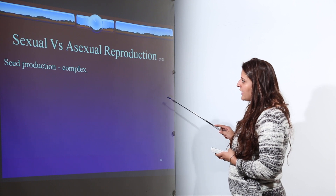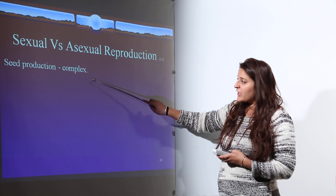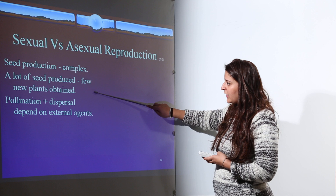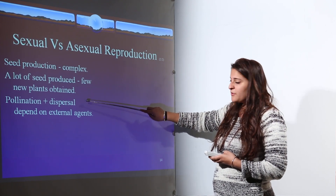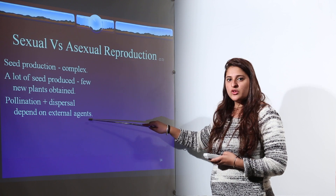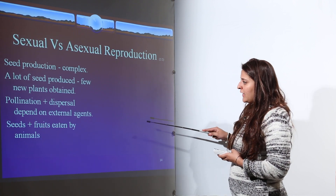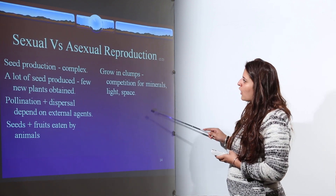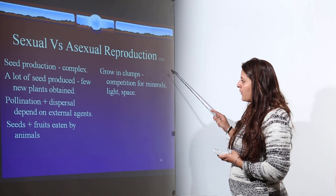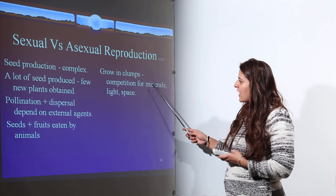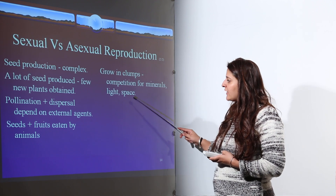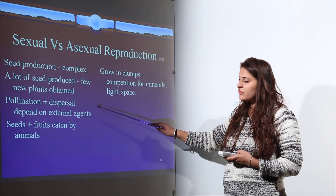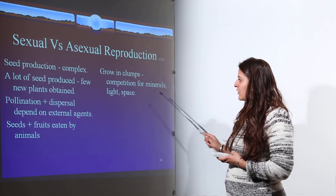Further differences: sexual reproduction is complex and produces a lot of seed, but only few new plants are obtained since pollination and dispersal depend on external agents such as wind or water. Seeds and fruits produced by sexual reproduction can be eaten by animals. Asexual reproduction plants do not grow individually — they grow in clumps, creating competition for minerals, light, and space. In sexual reproduction, plants grow at different places individually, so they have no competition for light, space, or minerals.